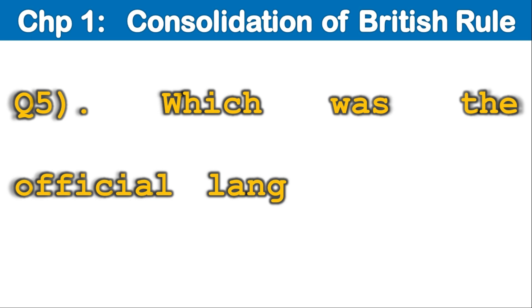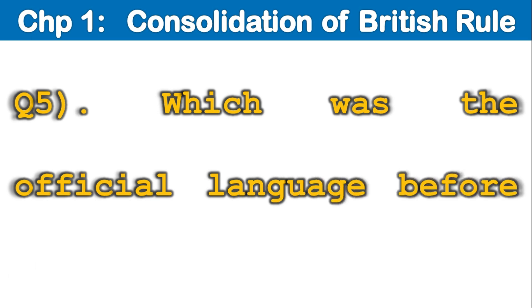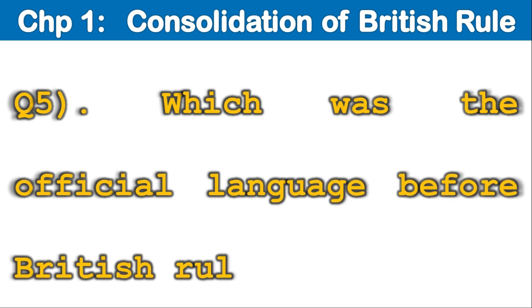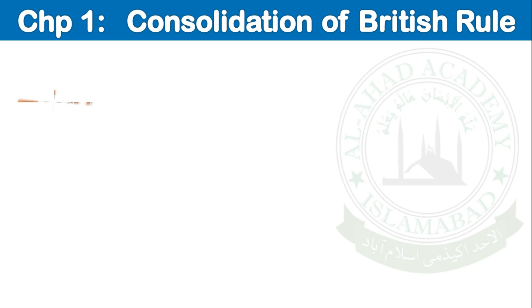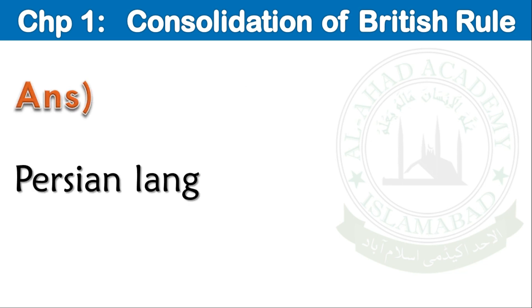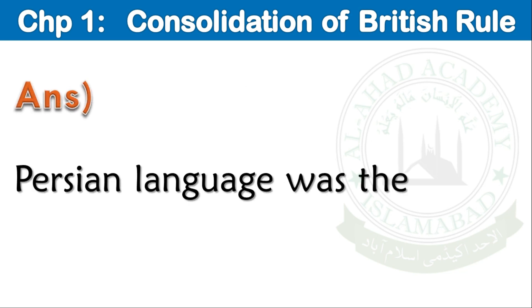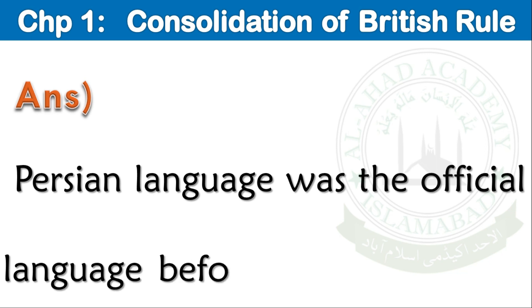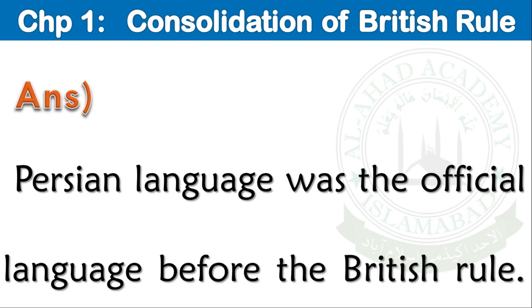Question number 5: Which was the official language before British rule? Answer: Persian language was the official language before the British rule.